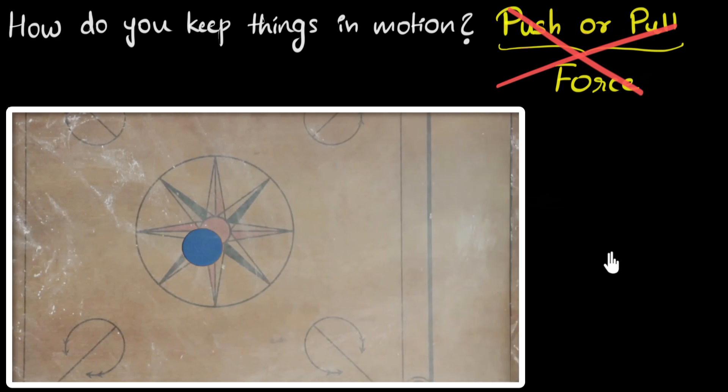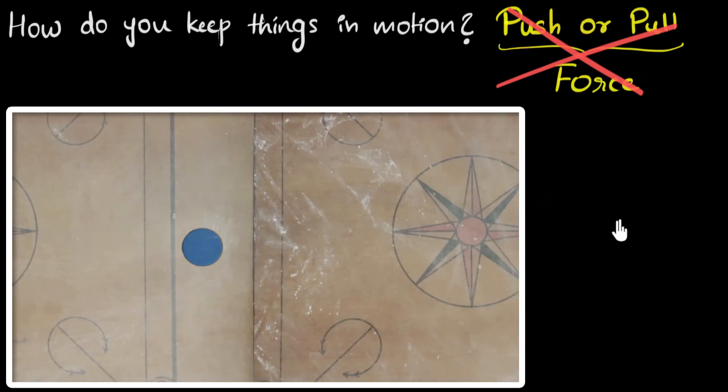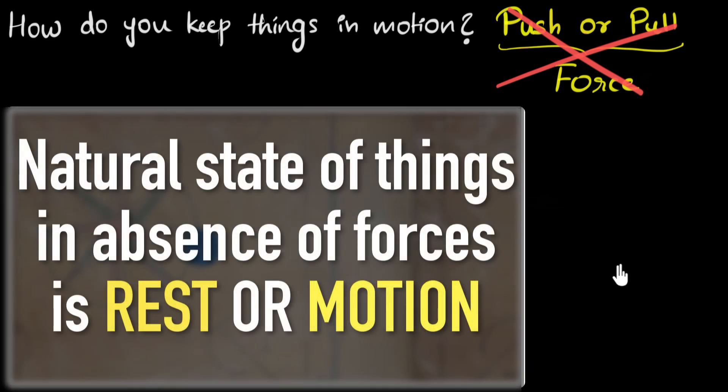In the absence of friction, there is no reason for things to be at rest. Things might as well be in motion. And so the natural state of things in the absence of forces is either rest or in motion.